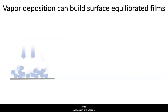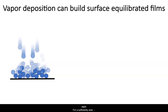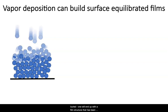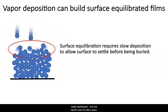One can use that rapid surface equilibration to build films. Every atom of a vapor-deposited film starts out at the surface, where relaxation is rapid. For a sufficiently slow deposition, such that incoming particles settle in before being buried, one will end up with a film structure that has been totally equilibrated, and one needn't wait for 20 million years.